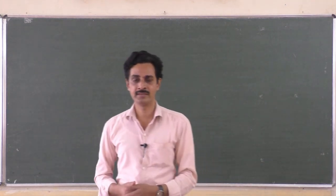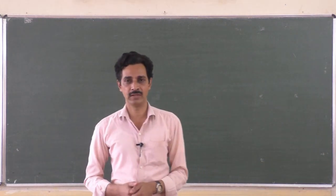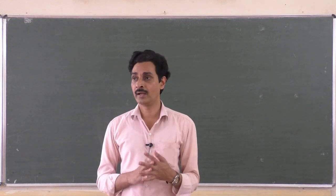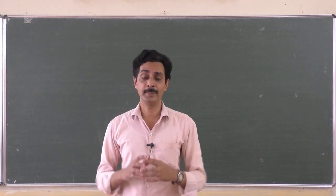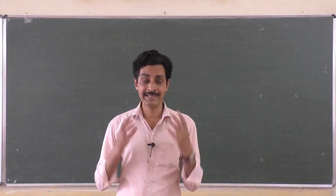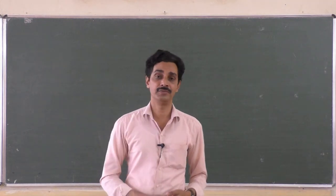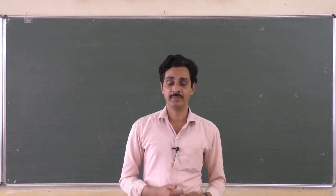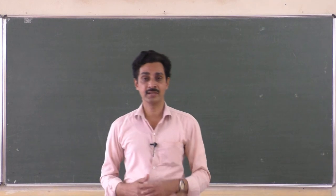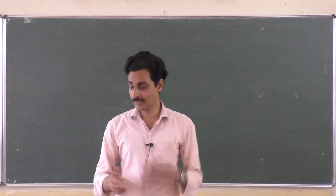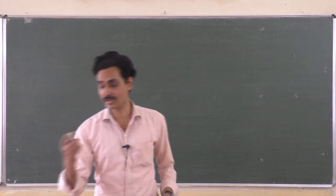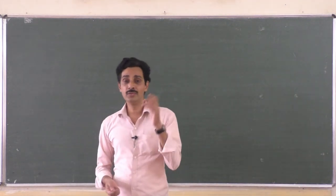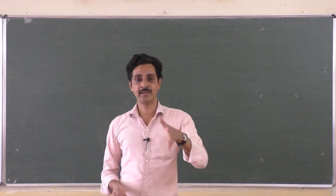Maxwell found an inconsistency in Ampere's circular law. We will have a quick review: Ampere's circular law is used to find out the magnetic field at a point due to a current-carrying conductor.